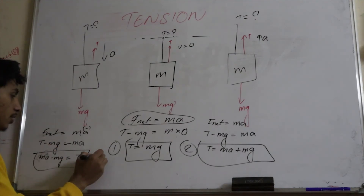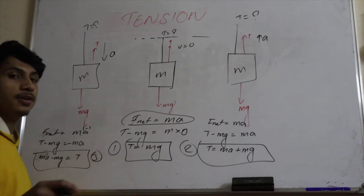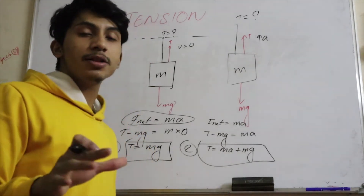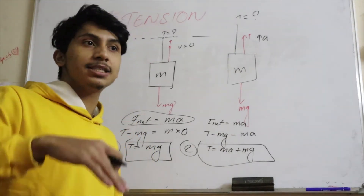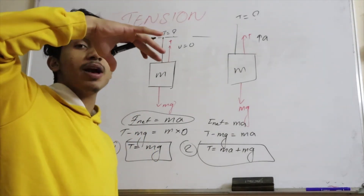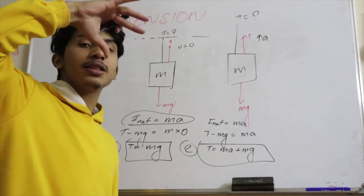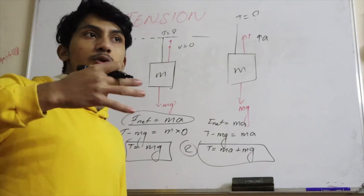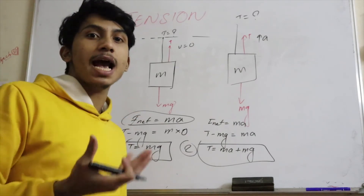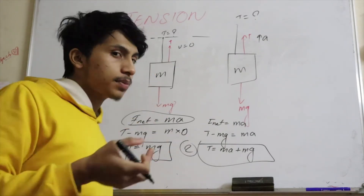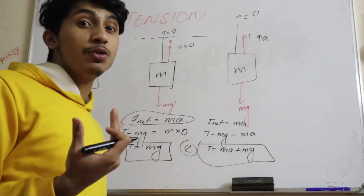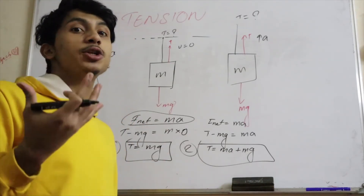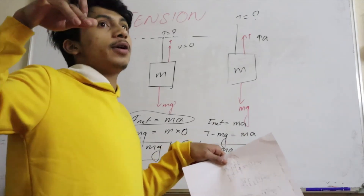So rearranging, tension equals mg minus ma. This is the third condition. To summarize: there are three cases for tension. When velocity is zero and the mass is just hanging, the tension equals its weight, since no other force is acting on it.